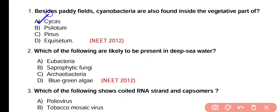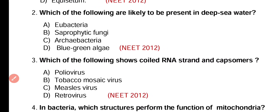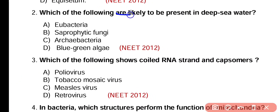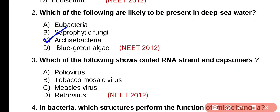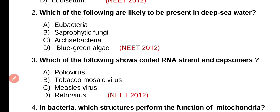Question number 2. Which of the following are likely to be present in deep sea water? Eubacteria, saprophytic fungi, archaeobacteria, or blue-green algae. Correct answer is option C. Archaeobacteria are an ancient group of bacteria and they are present in deep sea water and hot hydrothermal vents.